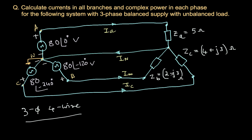The question is: calculate currents in all branches and complex power in each phase for a three-phase balanced supply with unbalanced load. It's a straightforward question, so you may pause the video now, try the answer yourself, and later compare your answers with mine.